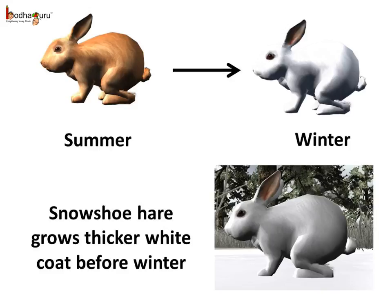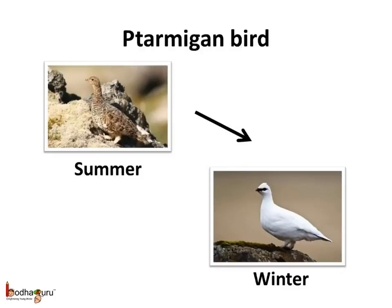Some animals grow thicker white fur before the winter, like the fox and the rabbit. The reddish brown coat of the snowshoe hare turns white before the winter. White fur not only saves them from cold, it also helps in camouflage — that is, it helps them to hide in the white snow from their enemies or predators. In the ptarmigan birds, the brown feathers change to thick white feathers in the winter.